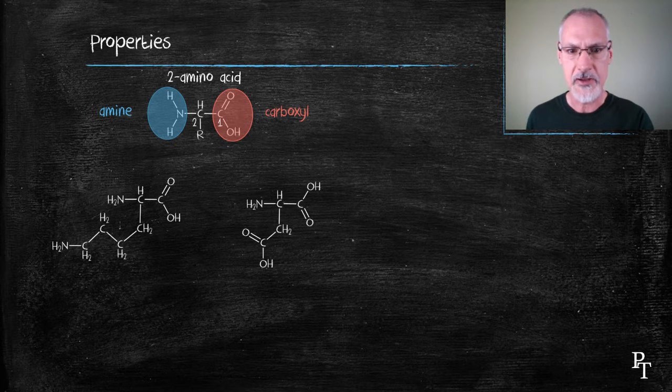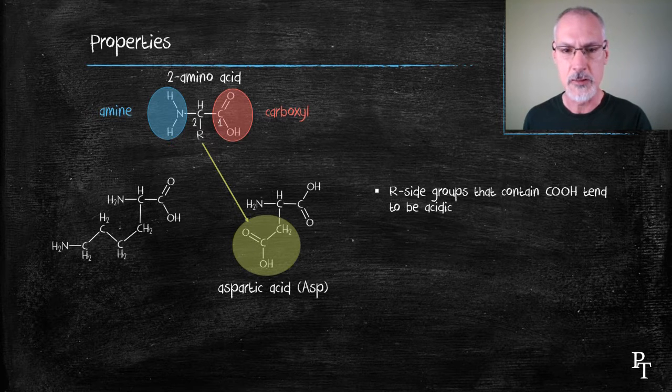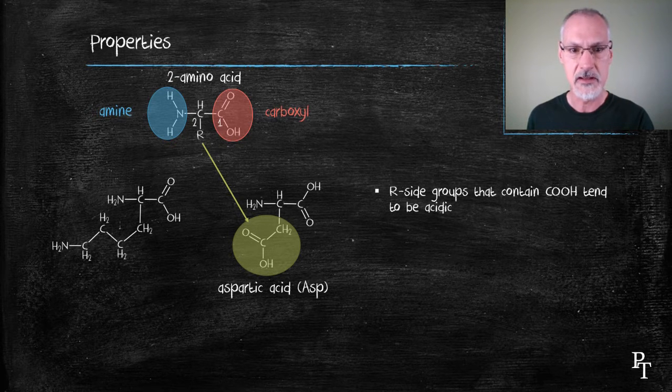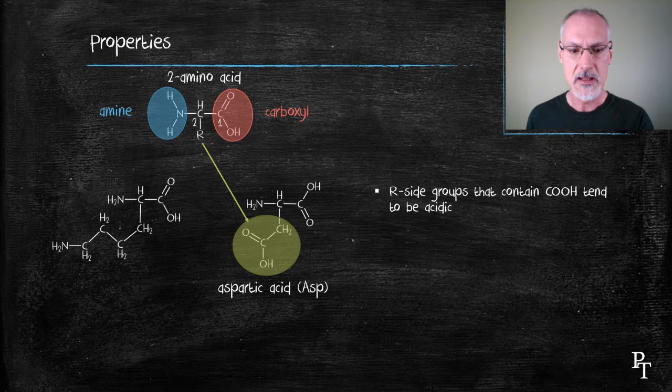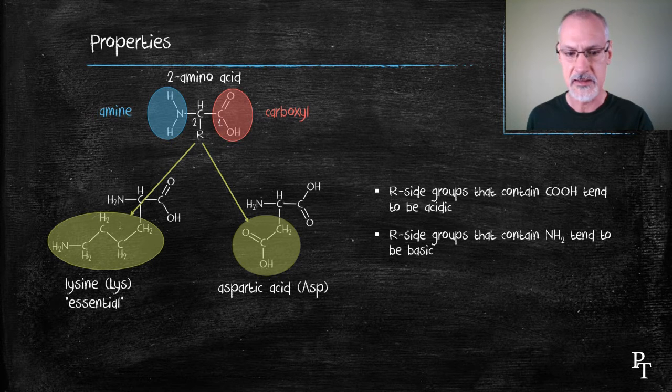Now, the nature of that R side group affects the properties of our molecule. For instance, if that R group contains carboxylic acids, then it tends to be an acidic amino acid. If, however, it contains nitrogen or amines, then they tend to be basic in nature.